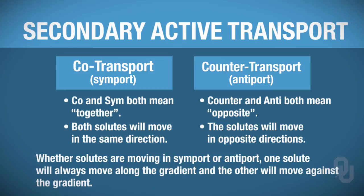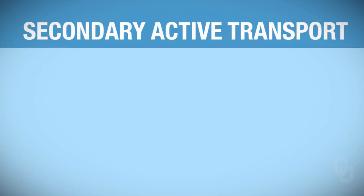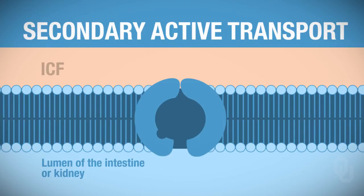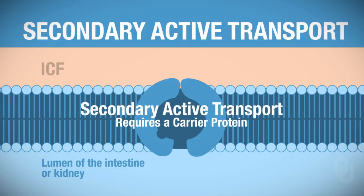You'll have an opportunity to work through some examples in a moment. The table below lists examples of secondary active transporters we'll discuss throughout the semester. Here's an example of secondary active transport. Get your bearings: here's the lumen of the intestine or kidney, here's the intracellular fluid, and we have this carrier protein—the SGLT. Secondary active transport does require a carrier protein.